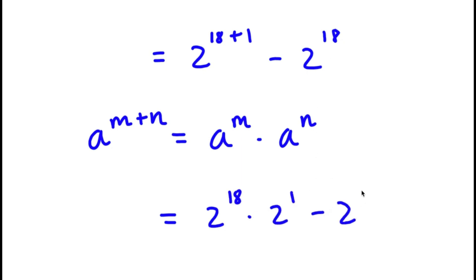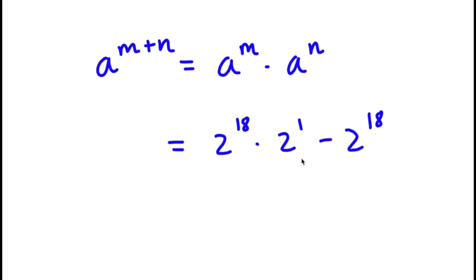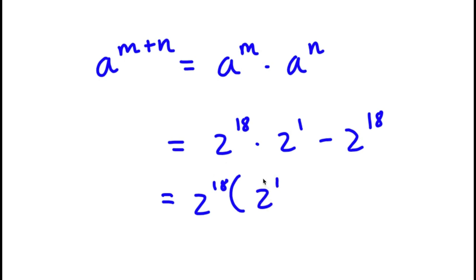And I have this minus 2 to the power of 18. Now from here, I can simply factor out 2 to the power of 18. So now I have 2 to the power of 18 times 2 to the power of 1 — divided by 2 to the power of 18 is simply just 2 to the power of 1 — and negative 2 to the power of 18 divided by 2 to the power of 18 is simply negative 1.